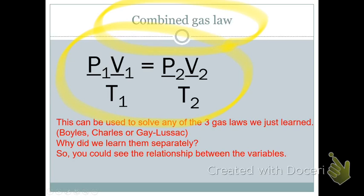In the combined gas law, you have pressure, volume, and temperature under two different conditions. We will give you at least five of these six variables, and you will have to solve for the sixth. Make sure you write this formula down, put a star beside it, and know it by heart. Pause or rewind if you need clarification.